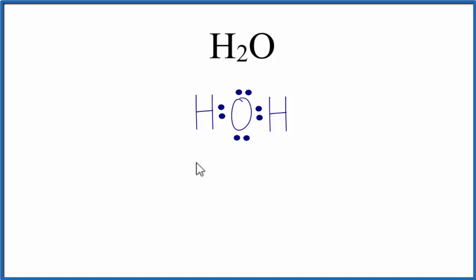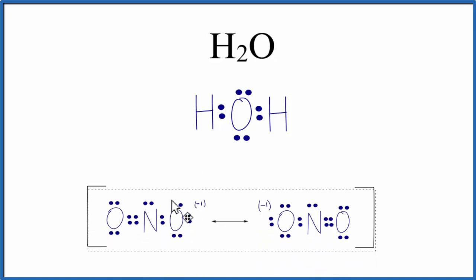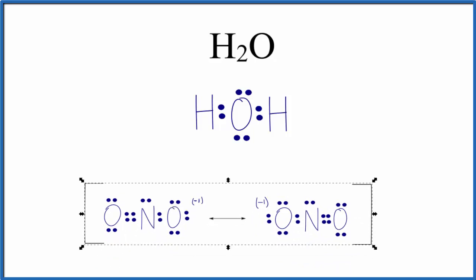If you had something like NO2-, you could draw a resonance structure. There's two ways you can do it. You could have a double bond here and a single bond here, or on this side we have the single bond and the double bond.